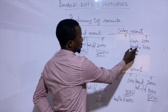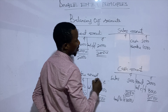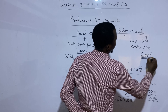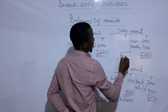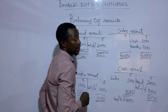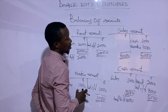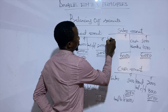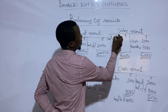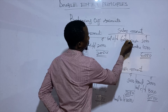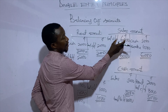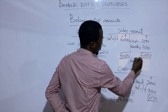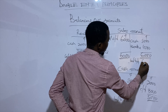Now let's consider the sales account. In balancing the sales account, the credit side is the bigger, being 6,000, and this will be the total for both sides. We find the difference between the total and the smaller side — the debit side has nothing, so the balance carry down is 6,000. The balance carry down at the debit side becomes the balance brought down at the credit side, so we have a balance brought down of 6,000.